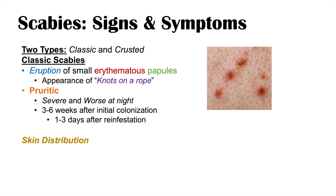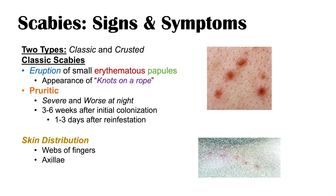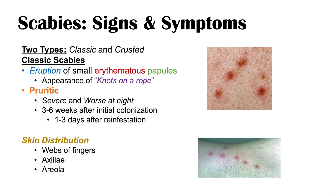There is a characteristic skin distribution in classic scabies. Generally, it involves the webs of the fingers, the axilla (armpit), the areola, and the genitalia.